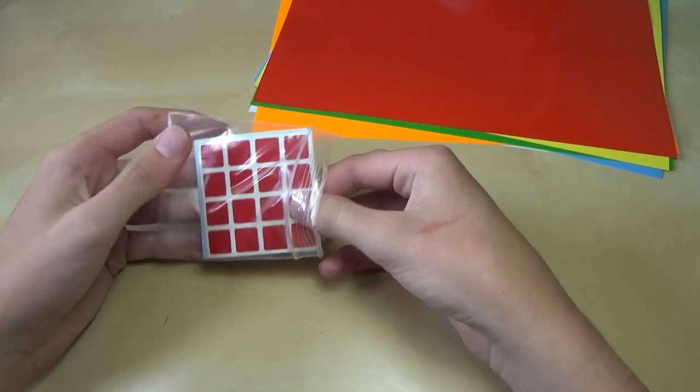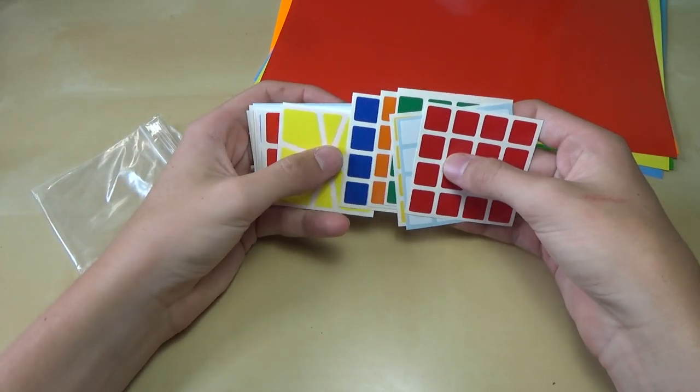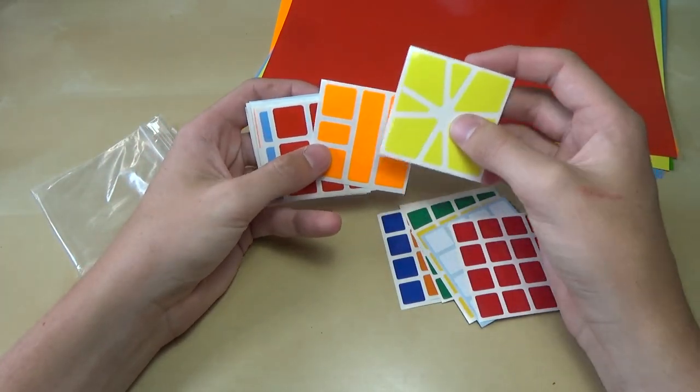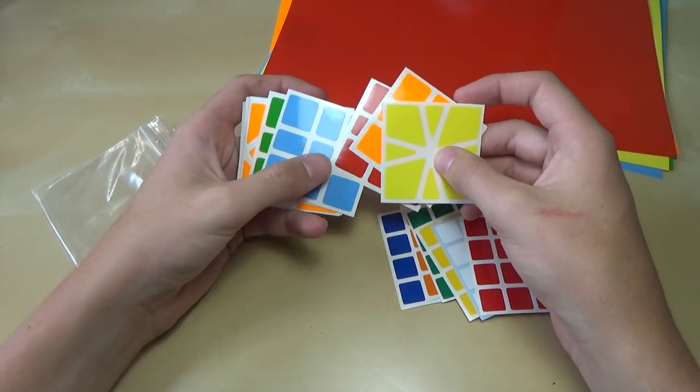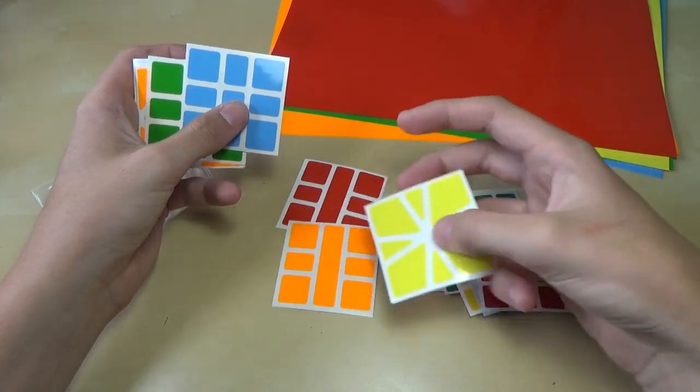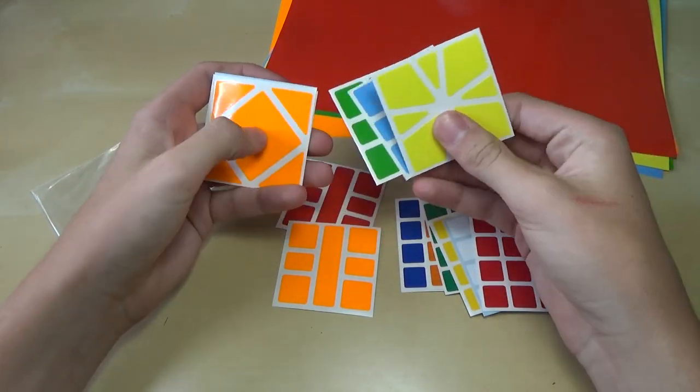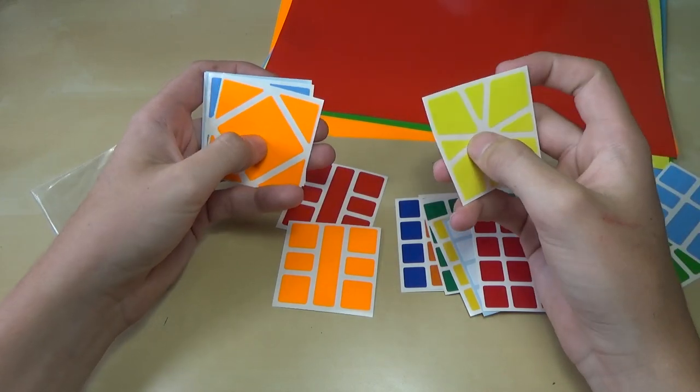And so of course we have the 4x4 that I mentioned earlier. 4x4, 4x4, 4x4. Square 1, this is to sticker up my Square 1 barrel. And so you see here, we have orange and red as the side colors. Yellow, green, blue—all my preferred shades, just so I like it.